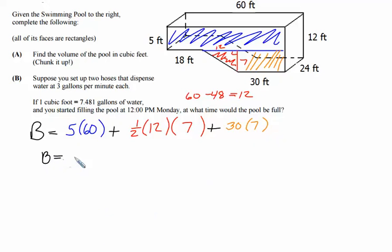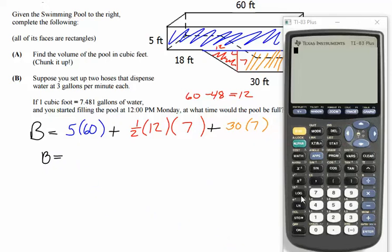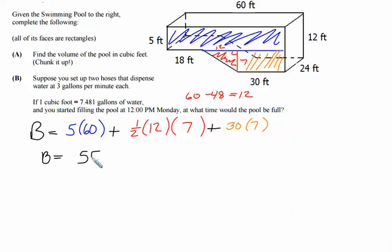So this was pretty quick and not too difficult. We could just type all of that in and get the total area of the base. So 5 times 60 plus 1 half times 12 times 7 plus 30 times 7. So the area of the base is 552.